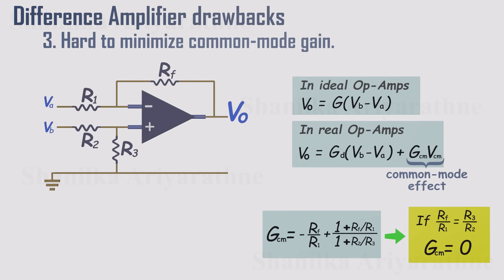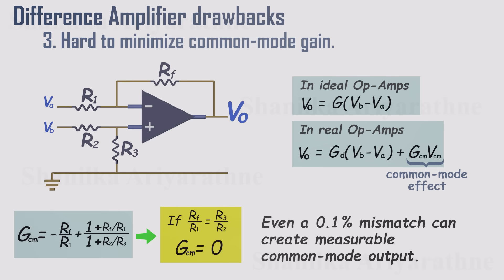That sounds perfect, right? But here's the problem. In practice, resistors always come with tolerances. Even a tiny mismatch, say 0.1%, is enough to throw off the ratio and produce measurable common mode output.